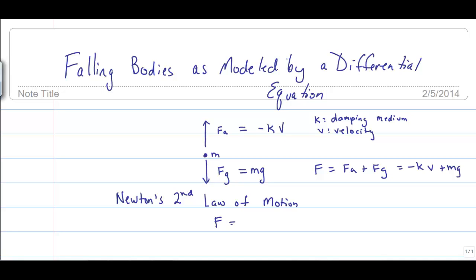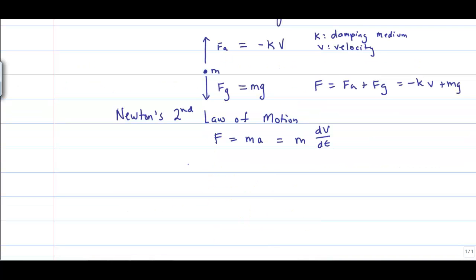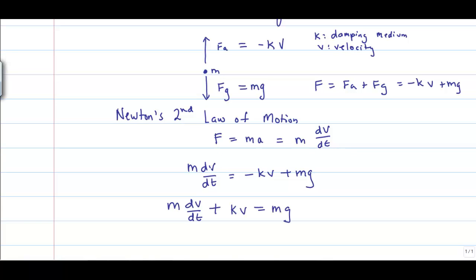We can also take into account Newton's second law of motion, which says force equals mass times acceleration. From calculus, acceleration is just the first derivative of velocity with respect to time. Setting these two forces equal to each other, and putting it in standard form with dependent variables on the left and constants on the right, we get a first-order, linear, ordinary differential equation.